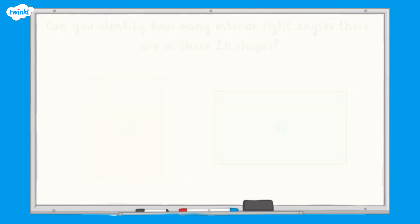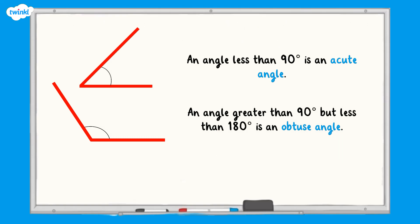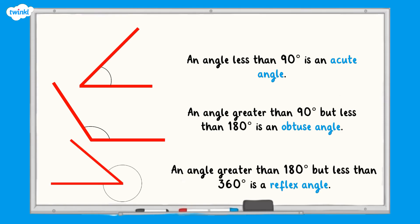Let's have a look at some other angles. An angle less than 90 degrees is an acute angle. An angle greater than 90 degrees but less than 180 degrees is an obtuse angle. An angle greater than 180 degrees but less than 360 degrees is a reflex angle.